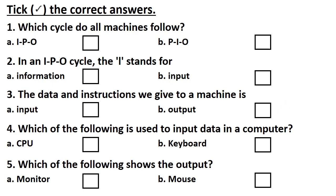Our first worksheet is: take the correct answers. First one: Which cycle do all machines follow? Option A: IPO, and Option B: PIO. Answer is Option A, IPO.